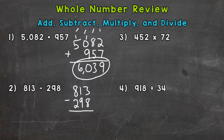This is a borrowing subtraction problem because we cannot do 3 minus 8 — that would get us into the negatives. So we need to borrow from the 1, which becomes a 0, and this 3 becomes a 13. So 13 minus 8 is 5. Now I cannot do 0 minus 9, so I need to borrow from the 8. The 8 becomes a 7, and that 0 becomes a 10.